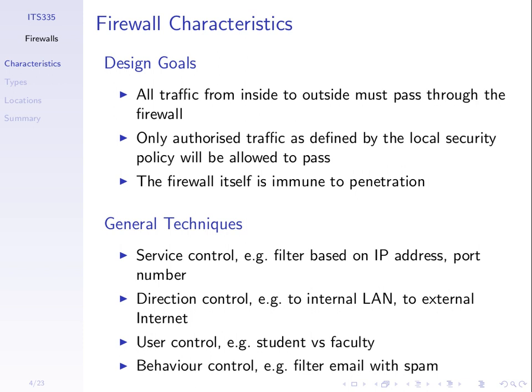We control traffic by setting rules according to the organisation's policy — only authorised traffic as defined by some policy is allowed to pass. The firewall itself must also be very secure. If an attacker takes control of the firewall, they can change its configuration to allow their traffic through, defeating the security mechanism. So the firewall must be immune to penetration.